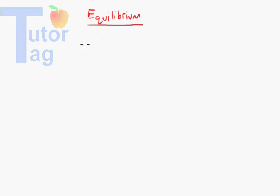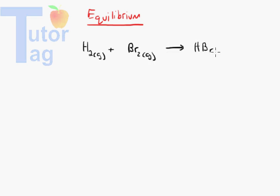Let's take a look at the reaction of hydrogen gas with bromine gas, which gives you 2HBr gas — hydrogen bromide gas. We have two moles of hydrogen and two moles of bromine giving us two moles of HBr.